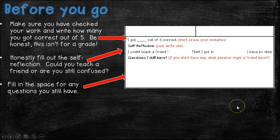So hopefully you did well. Make sure that you checked your work and you wrote how many you got correct out of five. Be honest, it's not for a grade. I know that drawing that graph and plotting those lines might have been a little confusing and maybe you forgot the title or you forgot to label the X or the Y axis. And that's okay. We'll go over it in class. And then honestly, fill out that self-reflection. Could you teach a friend or are you still confused? And fill in the space for any questions you still have.